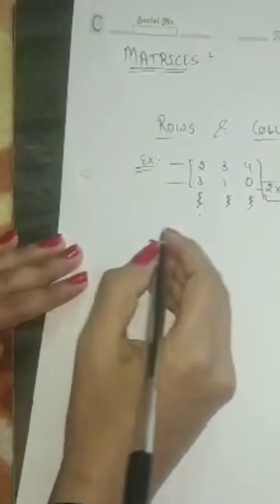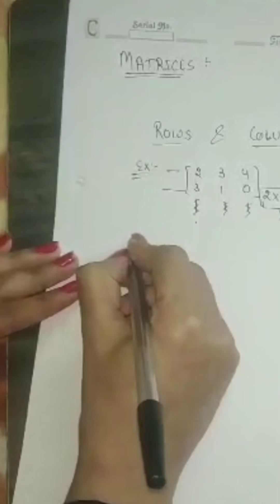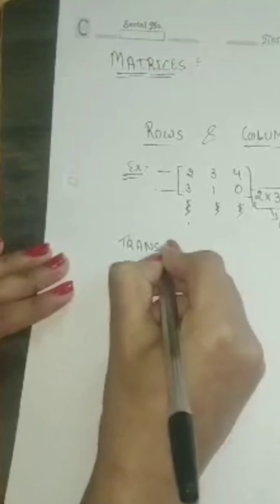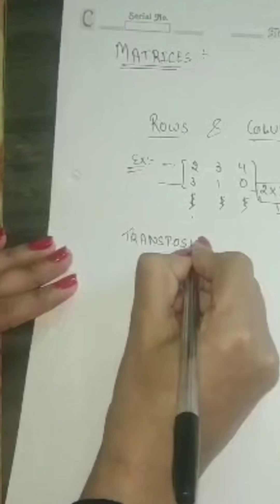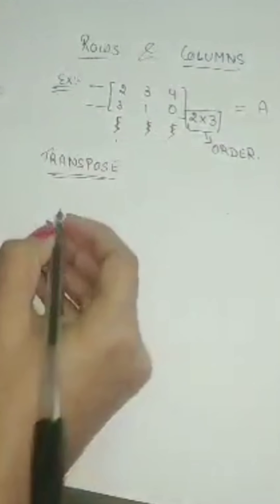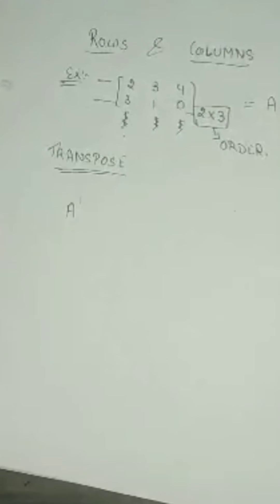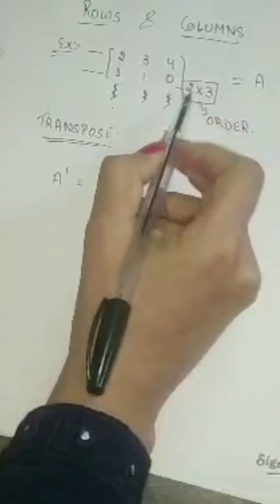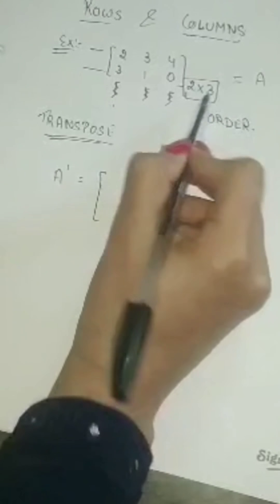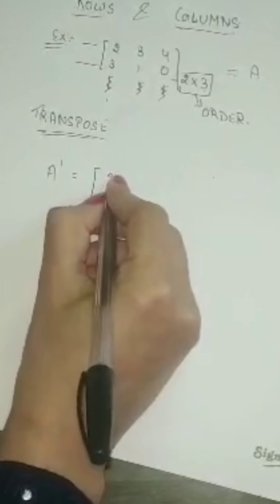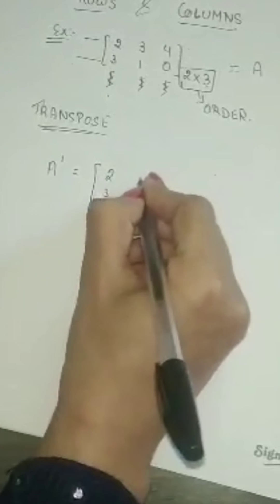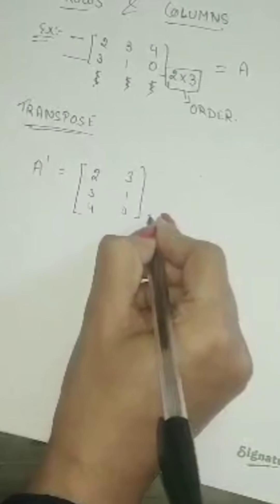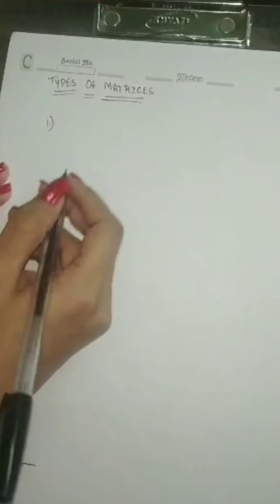Next, we are having transpose of a matrix. Transpose of a matrix is changing the rows into columns and columns into rows. For example, this matrix was A. If I want to find A transpose, if here it was 2 rows and 3 columns, then it will become 3 rows and 2 columns: 2, 3, 4, 3, 1, 0. So 3 rows and 2 columns.